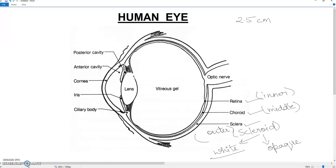It will maintain the shape of the eyeball. Next point, if we talk about the inner layer, the sclera will protect the inner layers.